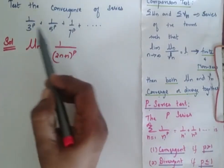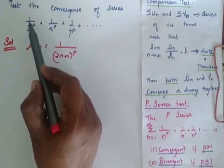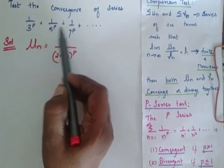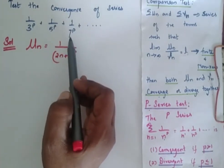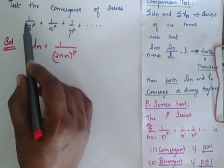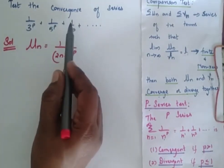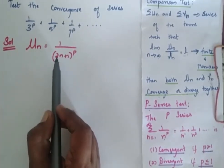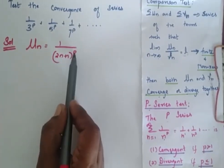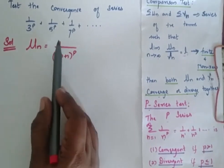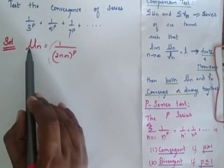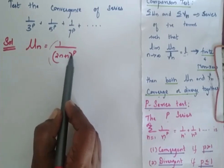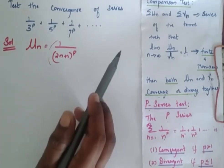Test the convergence of the series 1 by 3 power P plus 1 by 5 power P plus 1 by 7 power P. When I look at this series I can frame the general form as 1 by (2N plus 1) to the power P. So the general term UN is equal to 1 by (2N plus 1) to the power P.